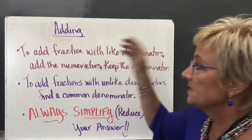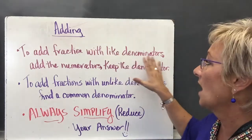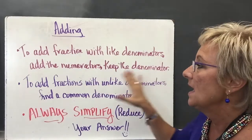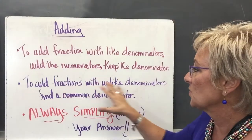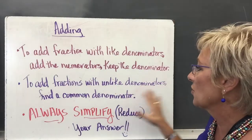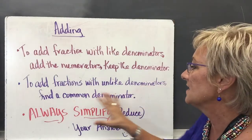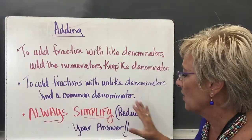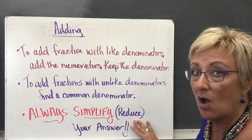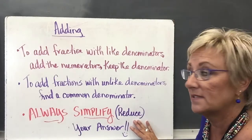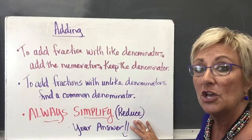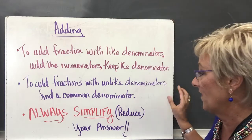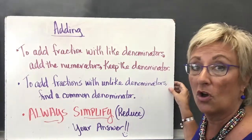A couple things you need to know. To add fractions with like denominators, you add the numerators and keep the denominator. When adding fractions with unlike denominators, you have to find a common denominator. You always want to simplify or reduce your answer — always. Even if you reduce it once and can see it can be simplified again, go back and simplify. That happens when we work with larger numbers.